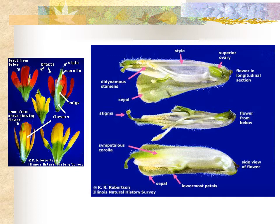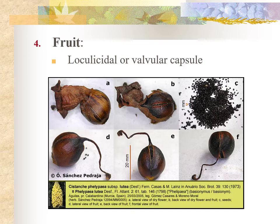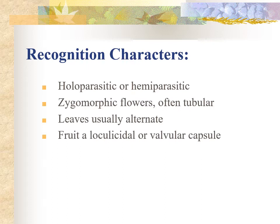The fruit in members of the Orobankaceae is usually a loculicidal or valvular capsule. To review some recognition characters: the biggest feature for this family is the presence of holoparasites and hemiparasites. Holoparasites are easy to identify because they lack chlorophyll entirely, while hemiparasites are trickier because they still retain chlorophyll. Flowers are zygomorphic and often tubular, leaves are usually alternate, and the fruit is a loculicidal or valvular capsule.